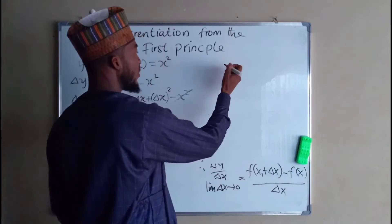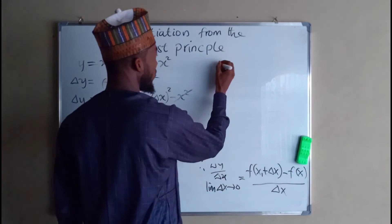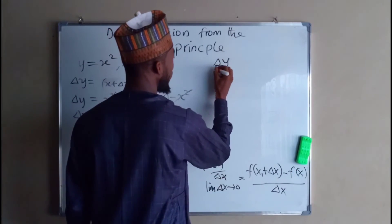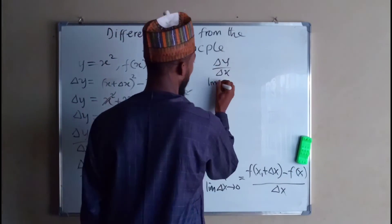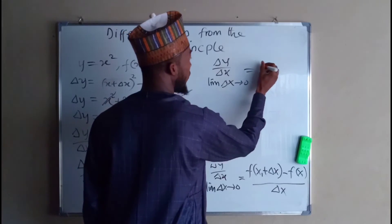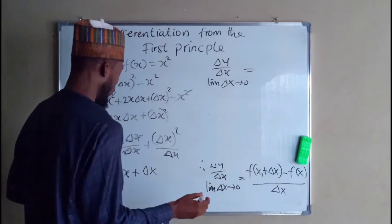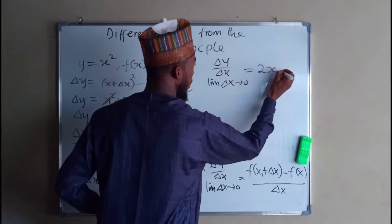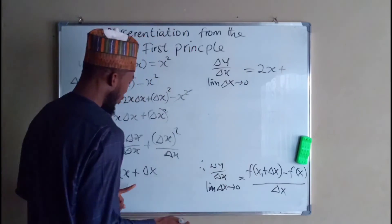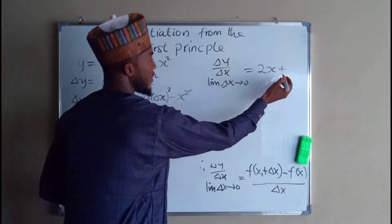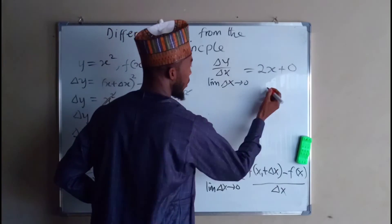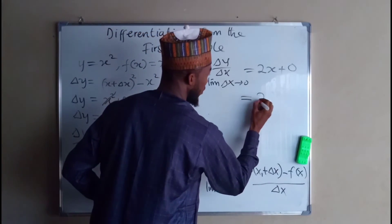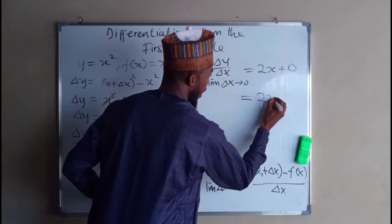So, as the limit of dx approaches 0, we have 2x plus dx, where dx equals 0. And this ends up giving us 2x.